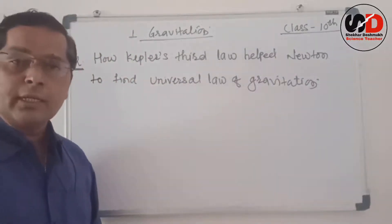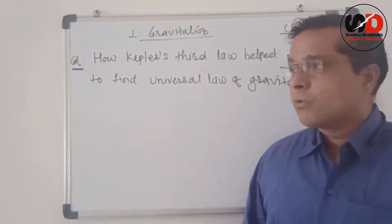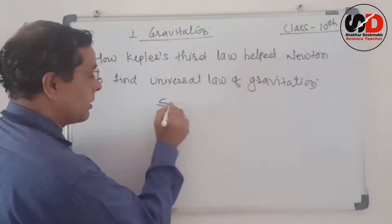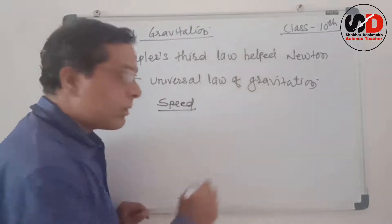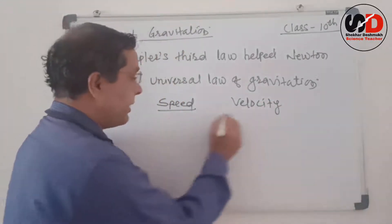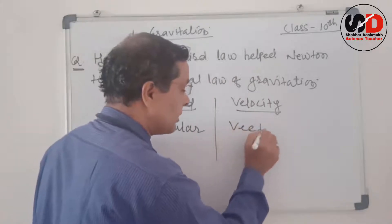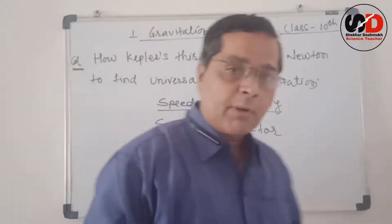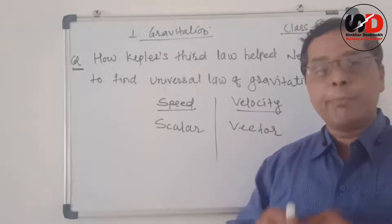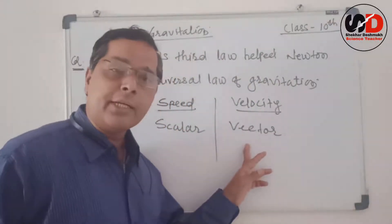In uniform circular motion, the object moves in a circular path and its speed remains constant — but we are talking about speed, not velocity. We must know the difference: speed is a scalar quantity and velocity is a vector quantity. So, if the ball is moving in uniform circular motion, its speed is constant, but the velocity definitely changes because it is a vector quantity and it depends on direction.